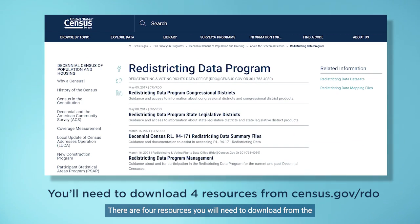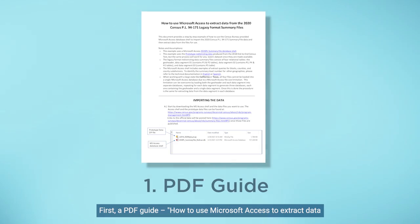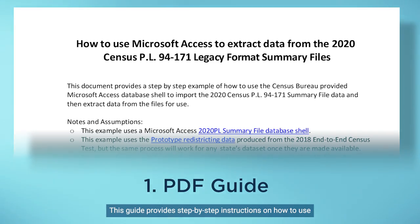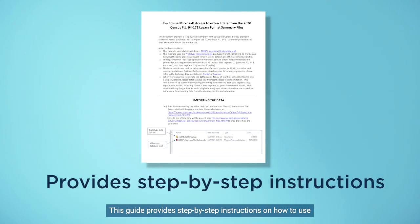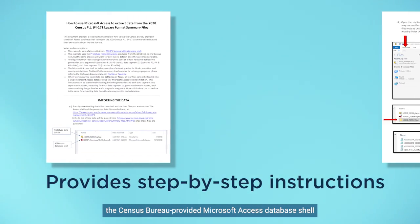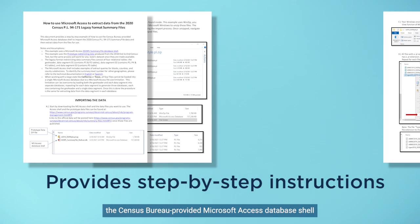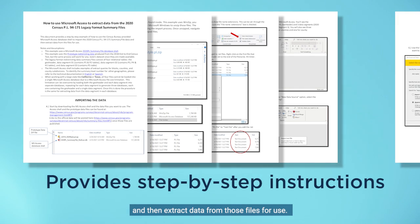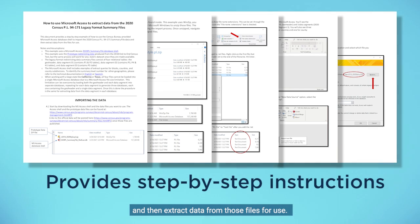There are four resources you will need to download from the Redistricting Data Program Office webpage to access the data. First, a PDF guide: how to use Microsoft Access to extract data from the 2020 Census PL94-171 Legacy Format Summary Files. This guide provides step-by-step instructions on how to use the Census Bureau-provided Microsoft Access Database Shell to import the legacy format summary file data and then extract data from those files for use.